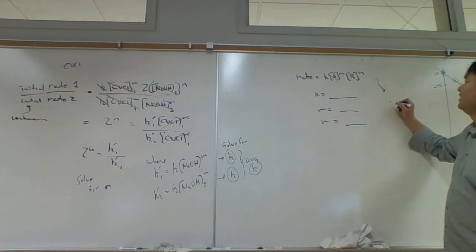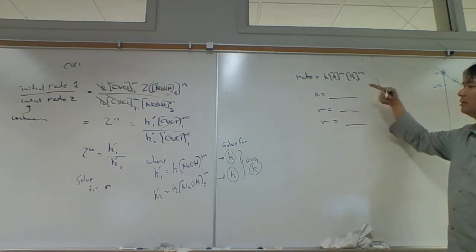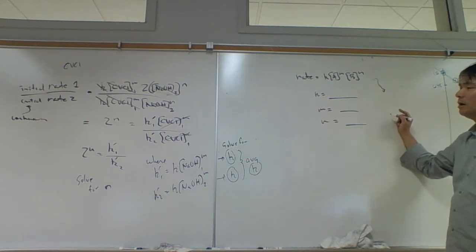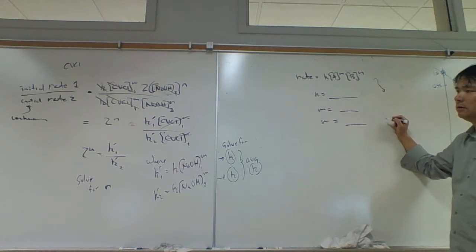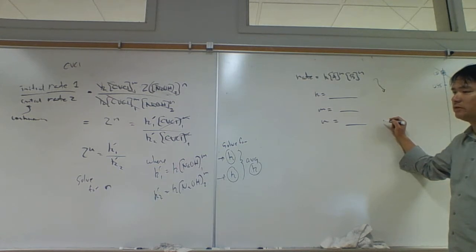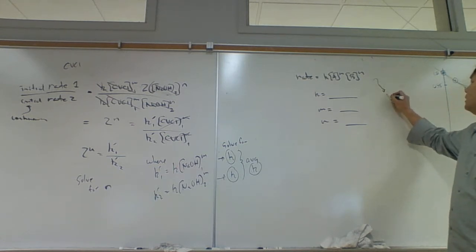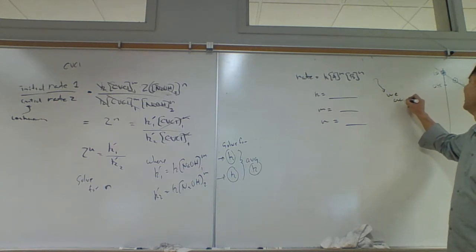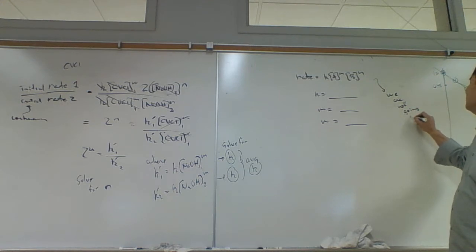The goal is to determine the rate law of the crystal violet chloride and sodium hydroxide reaction. We want to know K, M, and N. We aren't going to come up with an integrated rate law because that requires multivariable calculus, which is beyond the scope of this class. We will not do calculus on this multivariable thing.